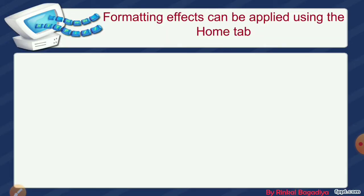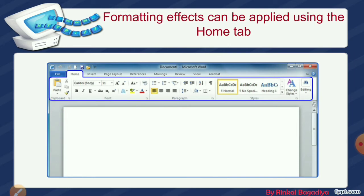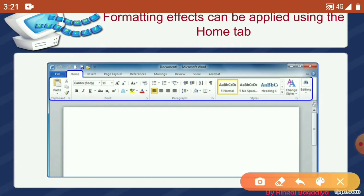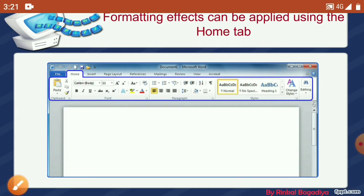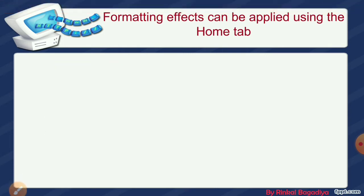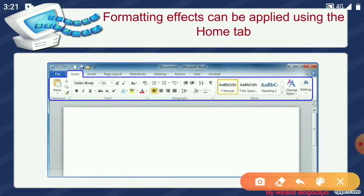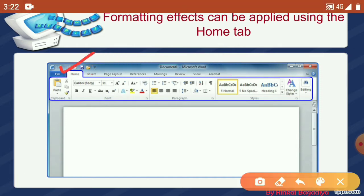Formatting effects can be applied using the Home tab. In Word 2010, so many tabs are available. You can see on the screen — this is the main screen of Word 2010, and this blue underline box shows the Home tab. The available tabs include Home, Insert, Page Layout, Reference, Mailing, Review, View, and more. Today we are going to learn about the Home tab. The Home tab has different groups: Clipboard, Font, Paragraph, Styles, and Editing.